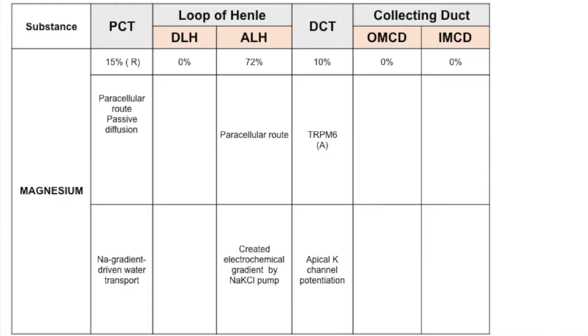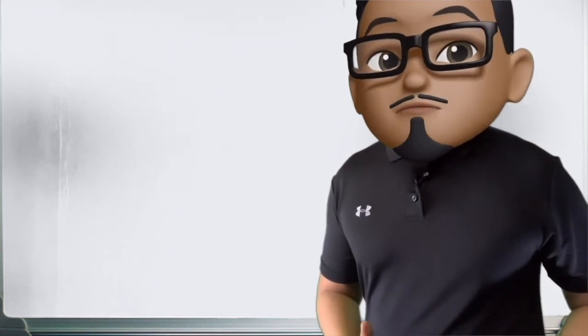Magnesium reabsorption occurs most in the ascending limb of Henle via the electrochemical gradient created by the sodium-potassium-2-chloride pump. Transcellular reabsorption also occurs in the distal convoluted tubule, though through an unknown mechanism. In the loop of Henle, calcium and magnesium are passively reabsorbed paracellularly.